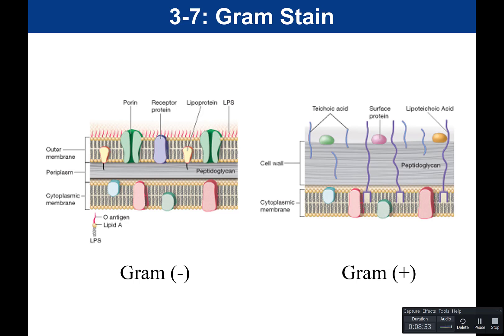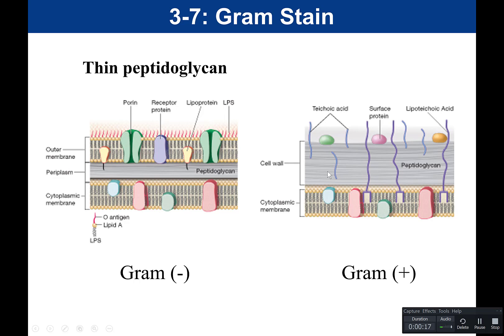Looking at the cell wall of gram-positive versus gram-negative, they differ in their cell wall structure. One of the big differences is the thickness of their peptidoglycan. Gram-negative has a very thin layer of peptidoglycan, while gram-positive has a very thick layer — about eight times thicker than the peptidoglycan in gram-negative.